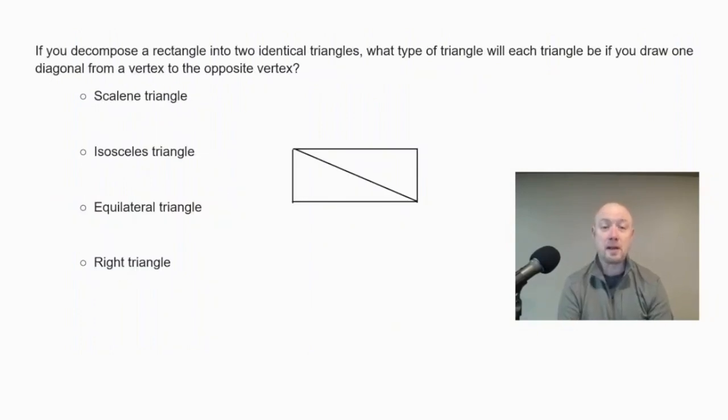If you decompose a rectangle into two identical triangles, what type of triangle will each triangle be if you draw one diagonal from a vertex to the opposite vertex? I set up a rectangle on here, and I drew in the diagonal from one vertex to the opposite. In a rectangle, I know that I have right angles. So that means in the corner we're going to have right angles here.